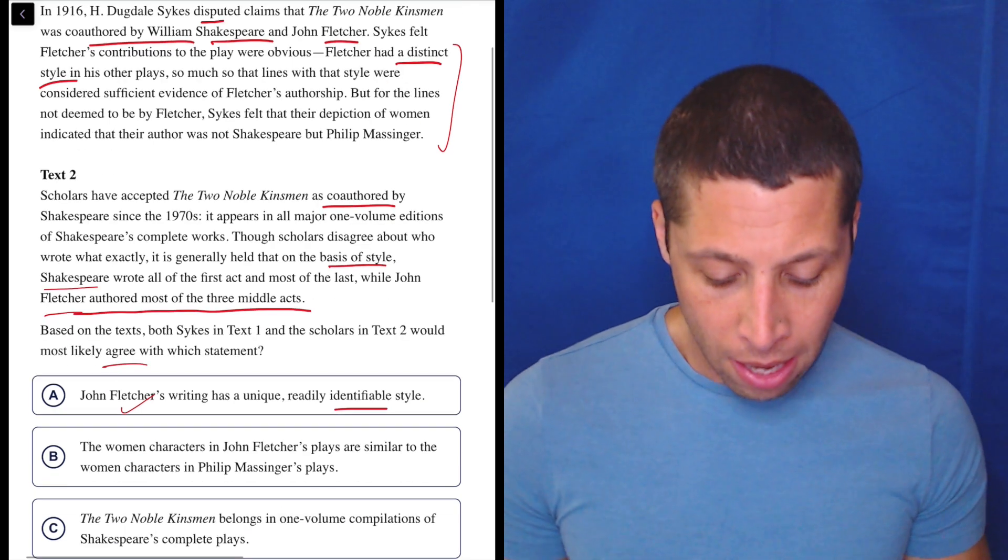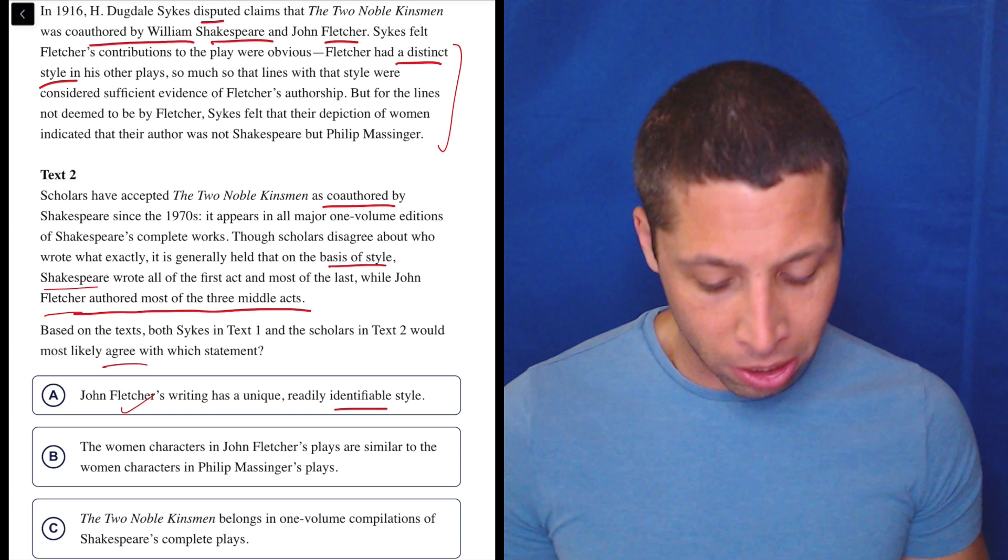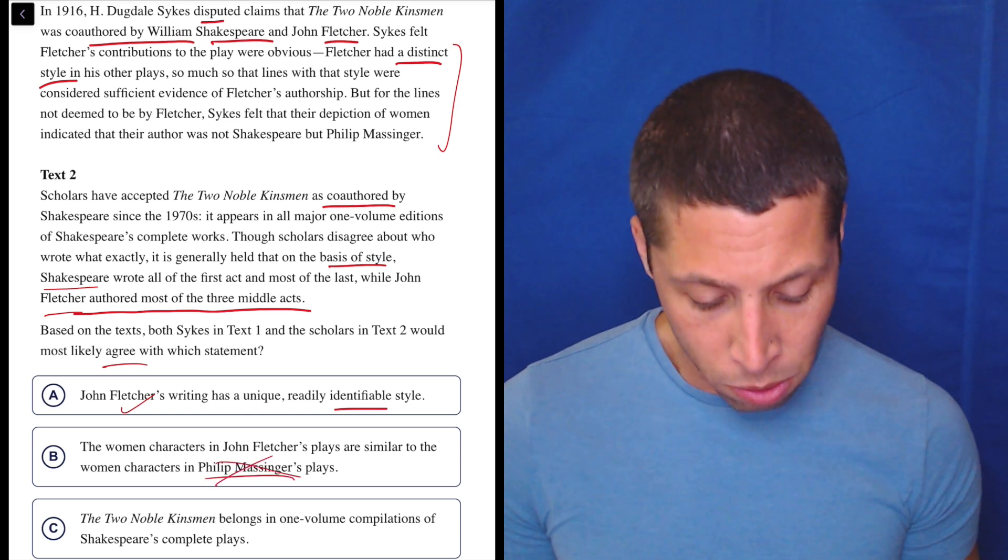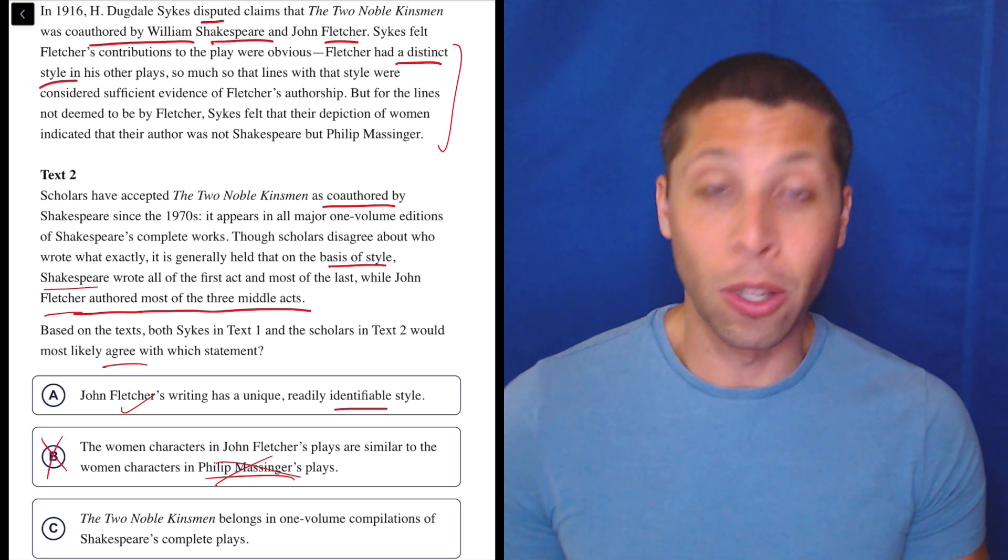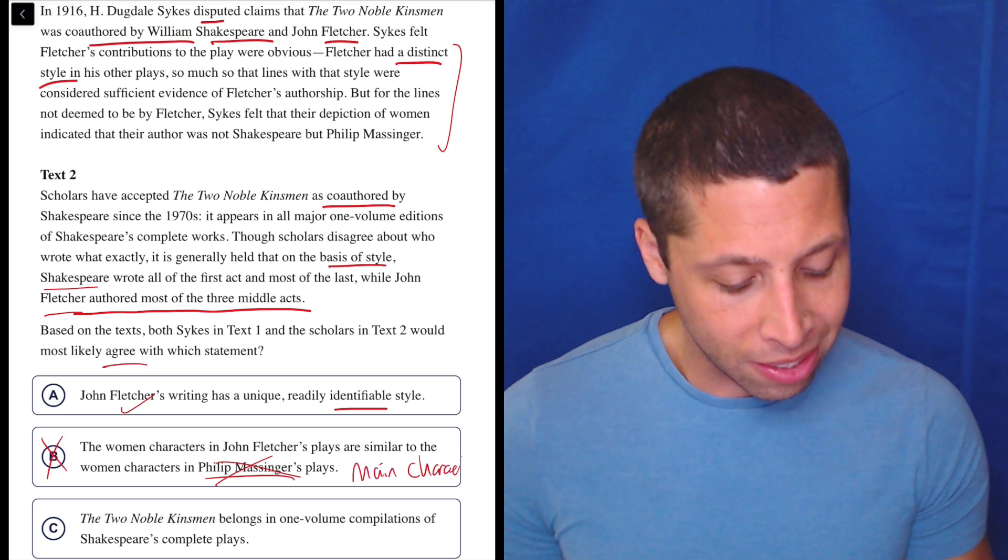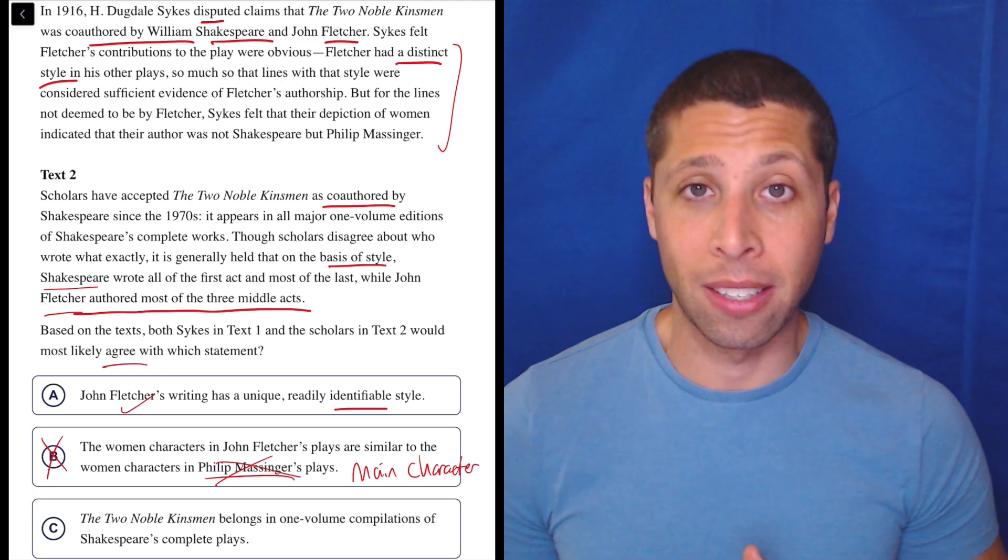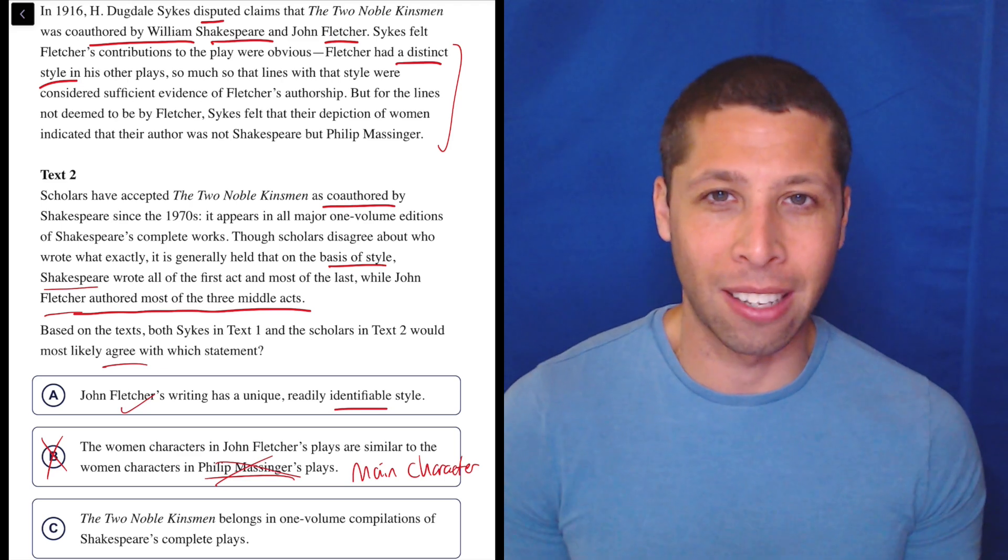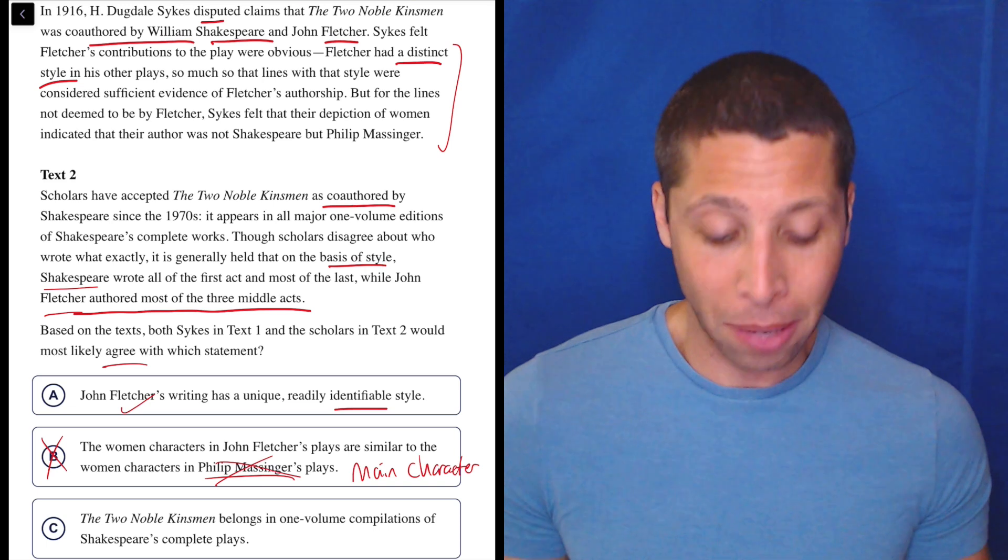Let's take a look at Choice B: The women characters in John Fletcher's plays are similar to the women characters in Philip Massinger's plays. Well, this guy isn't even mentioned in Passage 2, so who cares, right? Notice this is kind of like a main character issue. We see that kind of trap in lots of different SAT reading passages, but here it's helpful because we have two passages. We can just say, if the person isn't mentioned, that's probably not a good sign.